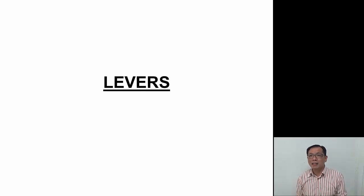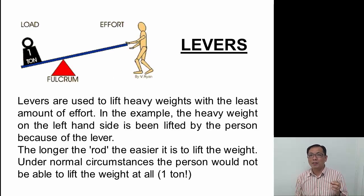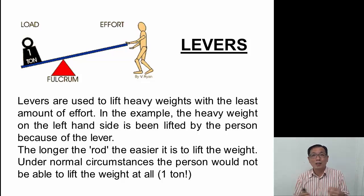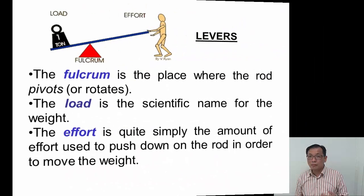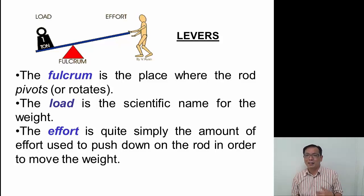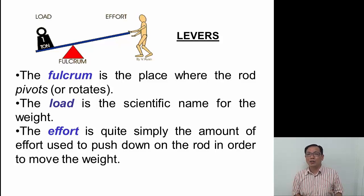Let's go to levers. Basically, levers are used to lift heavy weights with the least amount of effort. You can see the person on the left trying to push on the lever to lift the load on the other side, and in the center we have the fulcrum. The longer the rod on the side where the effort is, the easier it is to lift the weight. The terms we normally use: fulcrum is the place where the rod pivots; load is the scientific name for the weight; and effort is the amount of force you need to push onto the rod to move the load.